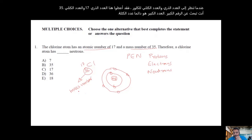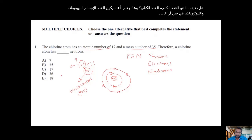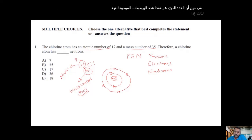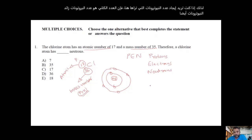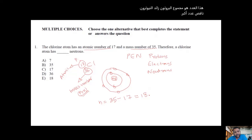Mass number is the total number of protons and neutrons, whereas atomic number is just the number of protons present. So if you want to find the number of neutrons: mass number minus atomic number gives you the answer. For chlorine, 35 minus 17 equals 18. So the answer is 18 neutrons.